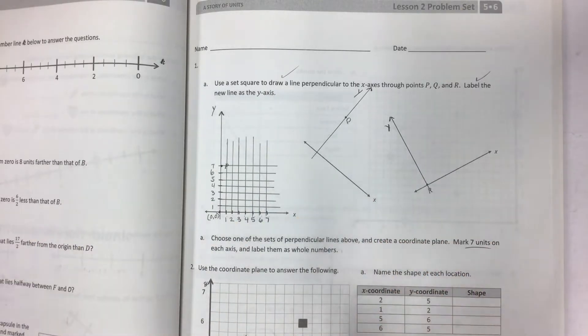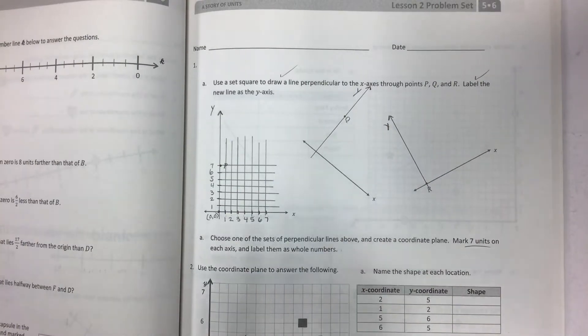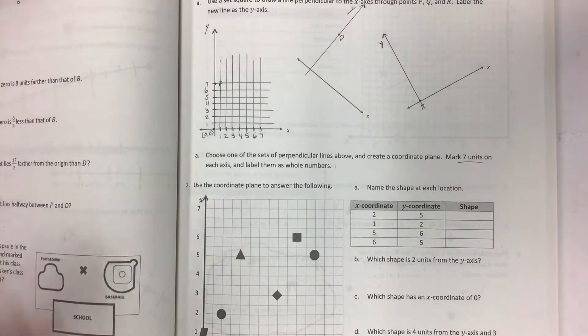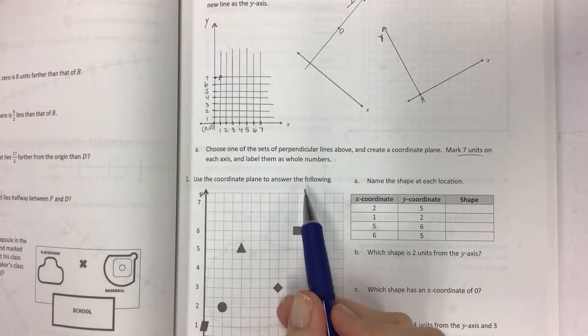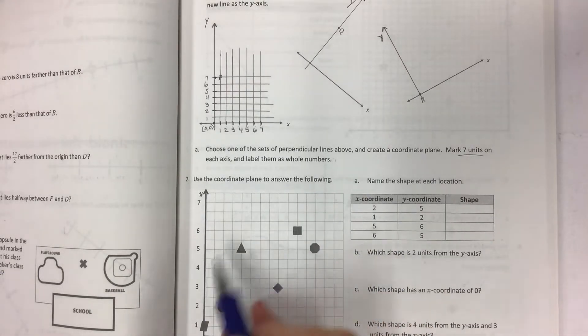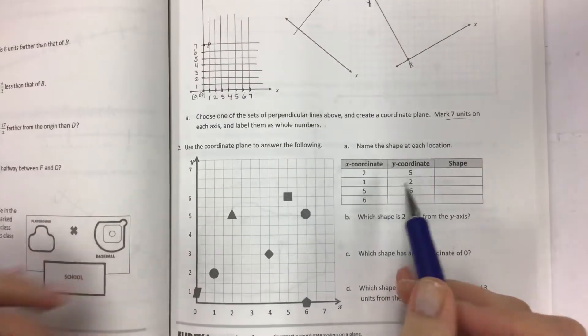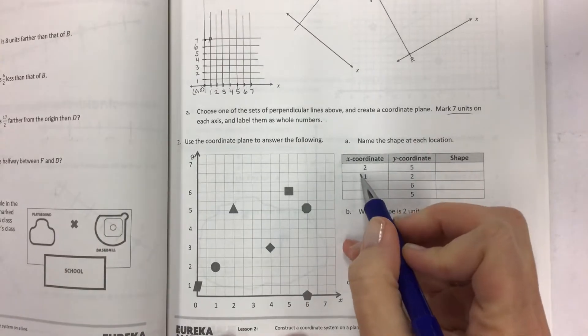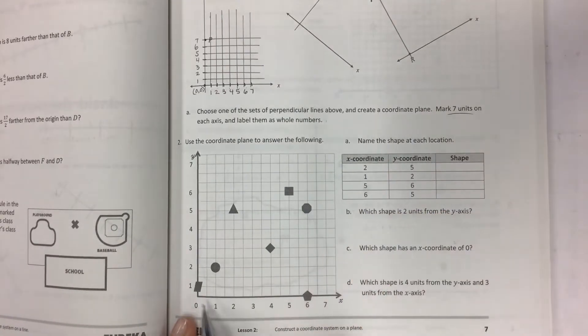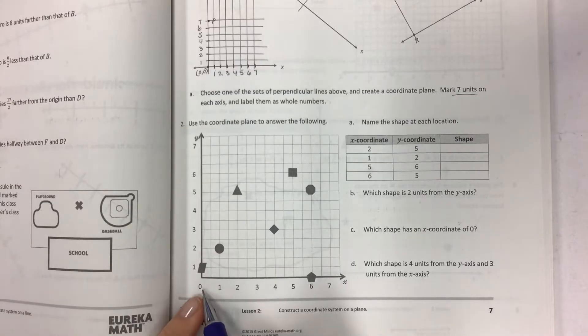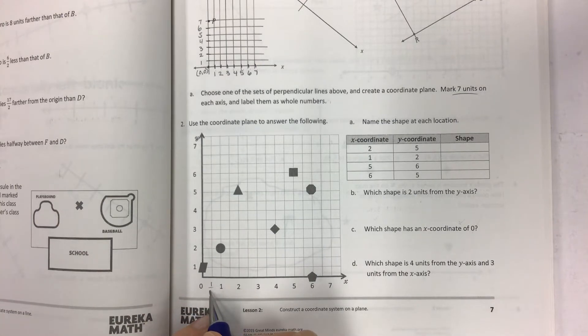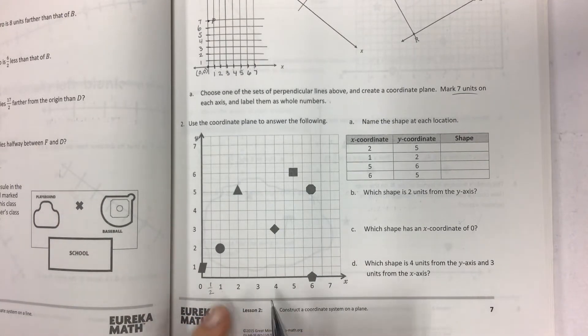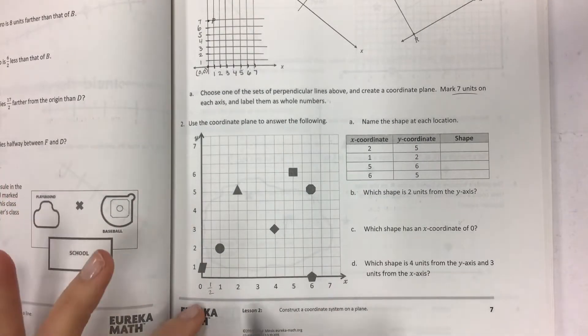There you go. So that's what a coordinate grid looks like. You can make your own on any piece of paper. And I do it all the time using binder paper because the blue lines are always my x-axis lines. So number two, use the coordinate plane to answer the following. Shapes here, x-coordinate, y-coordinate. All right, name the shape at each location. So if the x-coordinate is two, then you have to look at the bottom here. X-coordinate is one, two. Notice that they are counting not by ones, but by halves. So you may have some one and a half or two and a half measurements. Always know what your number lines are counting by.